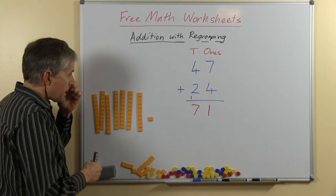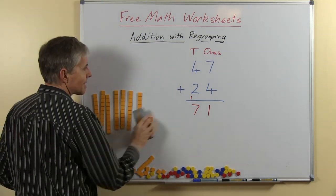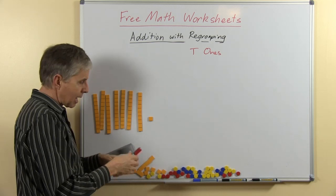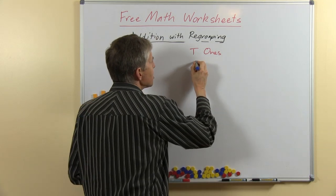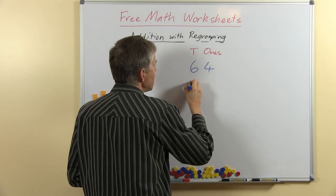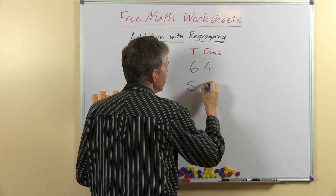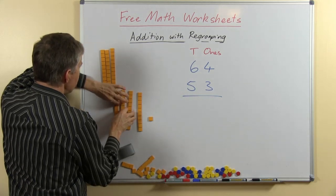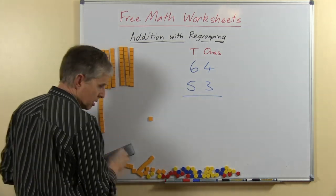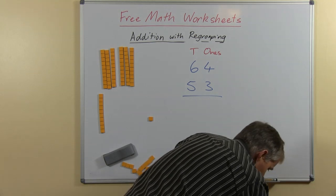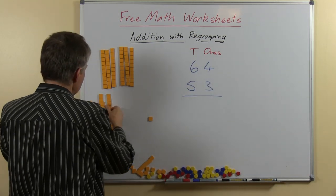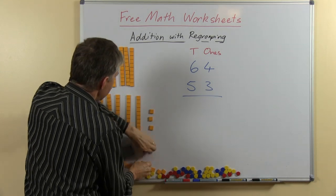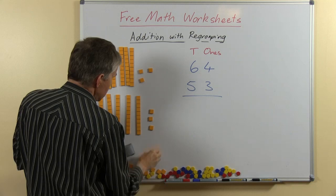Alright, I'm going to show you a slightly more difficult example because sometimes we have bigger numbers and we go over 100, so this is a more advanced question. So let me start with, what shall we do here? 64 plus 53, so I'm going to have to get some more blocks out. Okay, there's my 53 and 64.